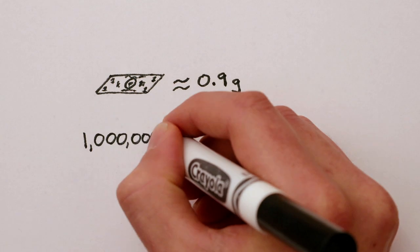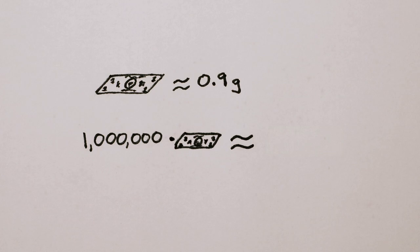Multiply 0.9 grams by a million, and we're done. A million dollars weighs 900 kilograms, or 2,000 pounds.